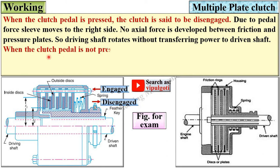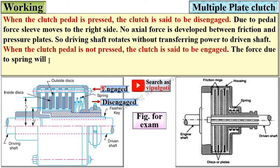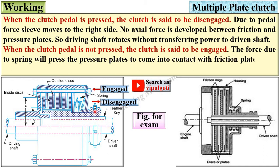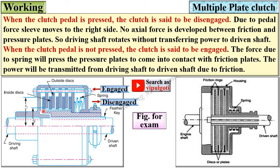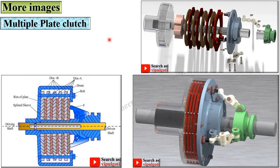When the clutch pedal is not pressed, the clutch is said to be engaged. The spring force presses the pressure plates into contact with the friction plates, and power is transmitted from the driving shaft to the driven shaft due to the friction between the plates. Here you can see multiple plates used in an exploded view and in assembly, making it easy to understand the construction and working.